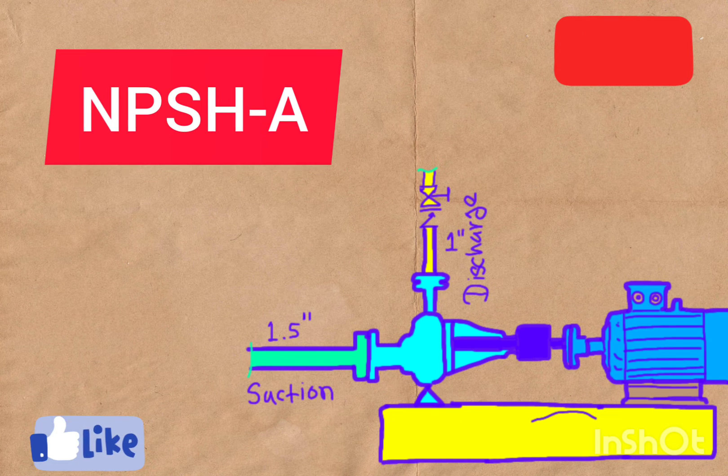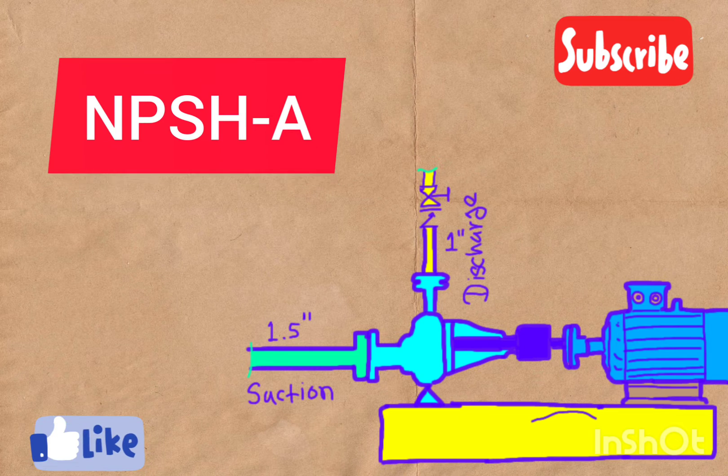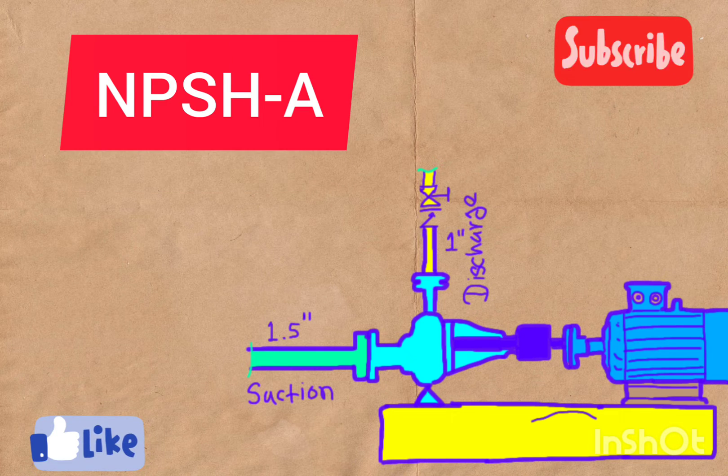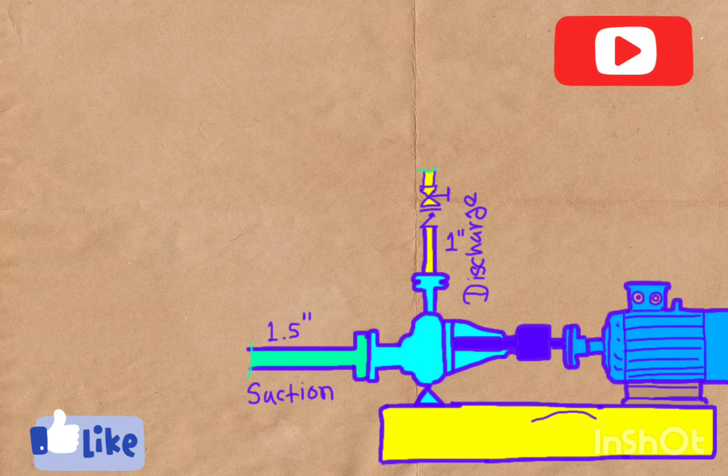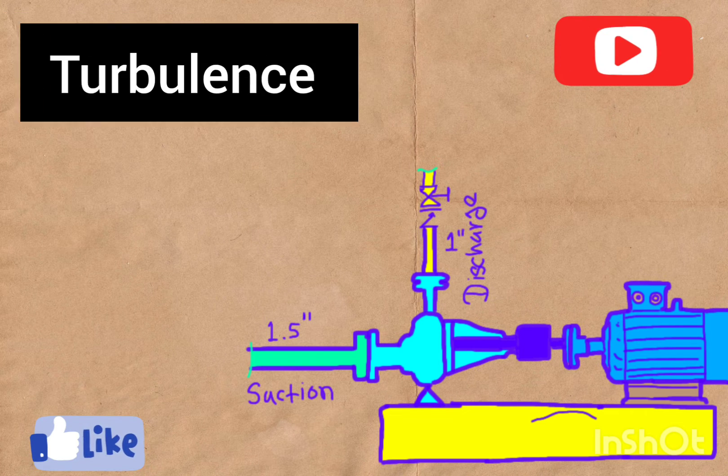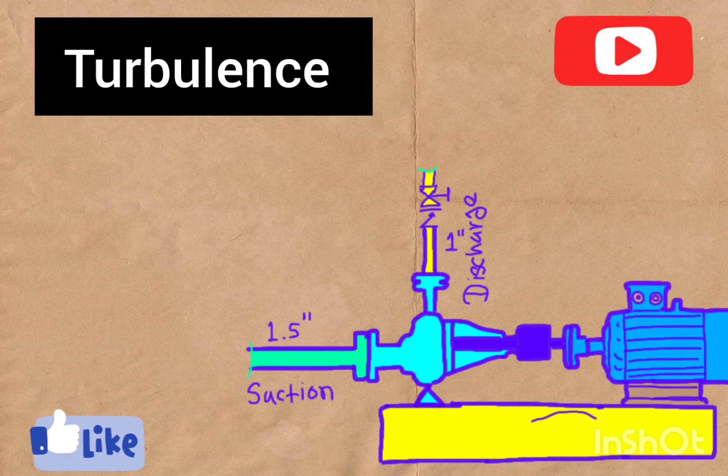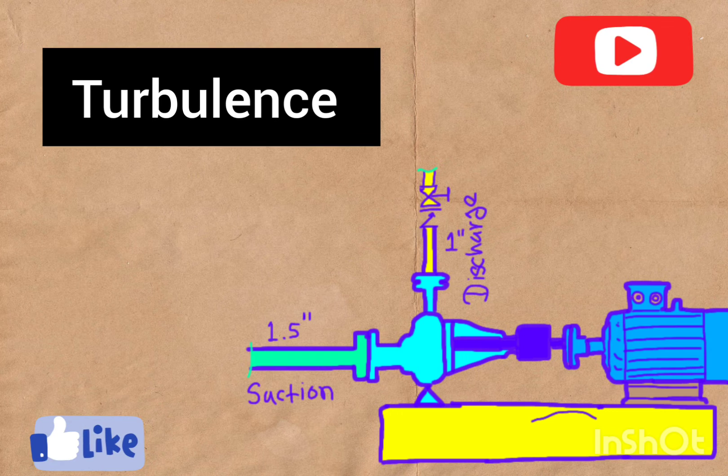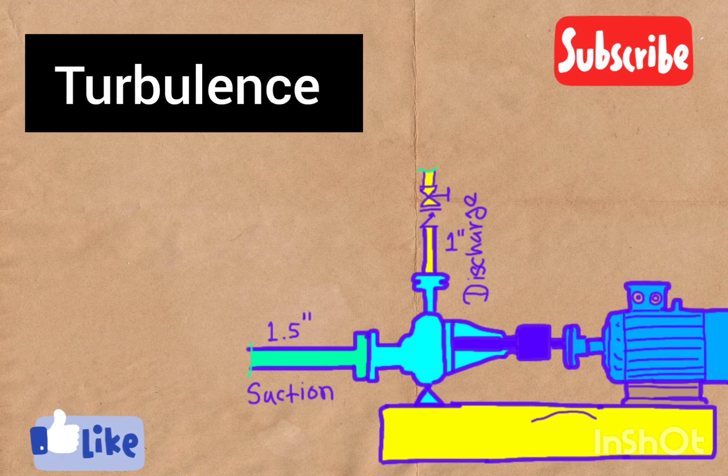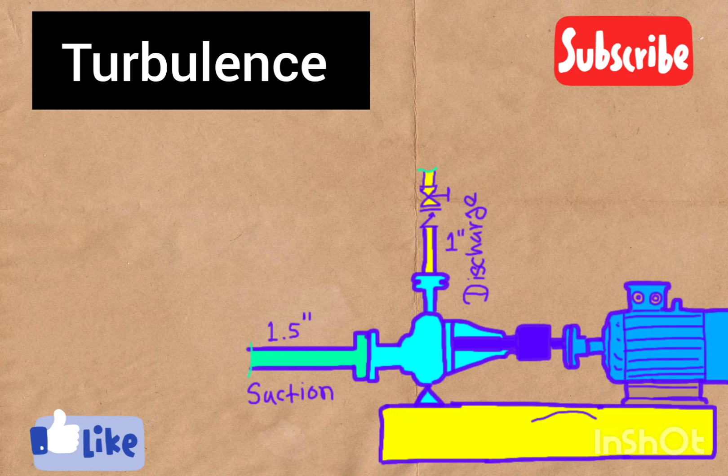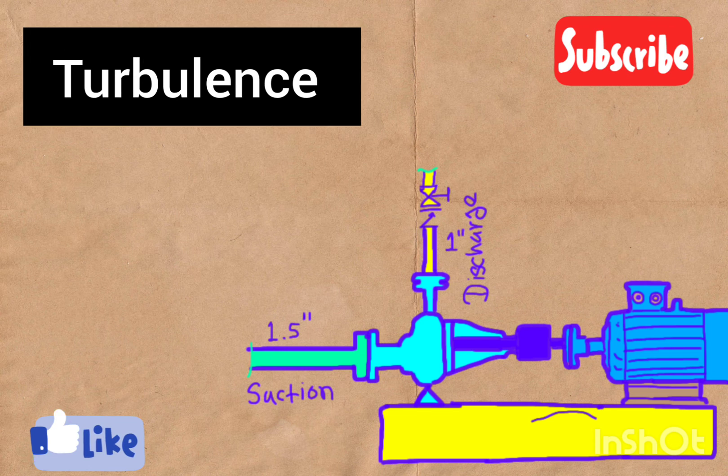And you guessed it: a bigger suction side helps keep the bodyguard happy. And the third reason is turbulence. Let's keep it real simple. A big suction side means smooth sailing of water - no bumps or turbulence. Think of it like a smooth highway for your pump. Less turbulence means our pump works better and doesn't waste energy.